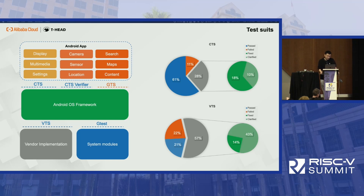Still, there are more than half of the VTS tests failing. The reasons are different — for example, some hardware components are still missing, like sensors, radio, and TV. Because those hardware components are not ready, we cannot verify them. In the short-term future, we are working toward covering more tests and pushing forward the passing rate of CTS and VTS tests.